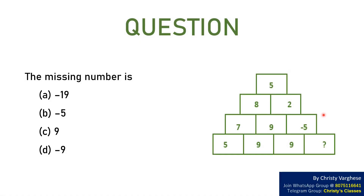In today's video, let us solve a question on arithmetic mean. The missing number is: A) minus 19, B) minus 5, C) 9, or D) minus 9.